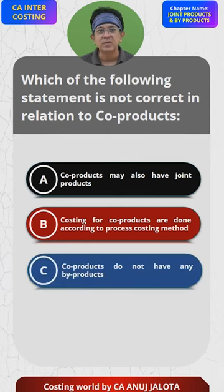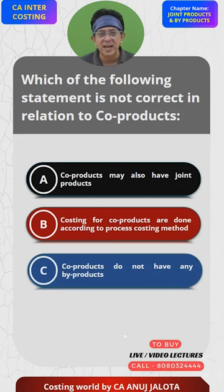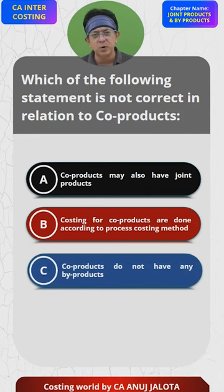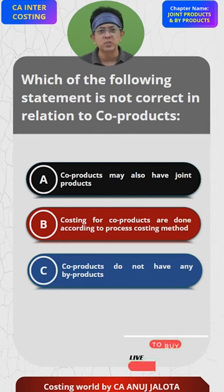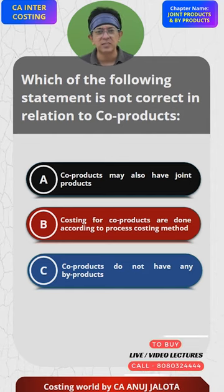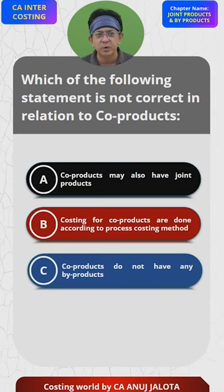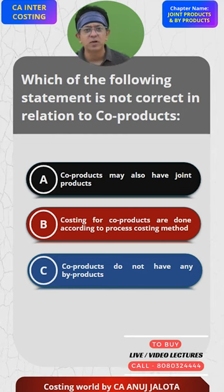Option C: Co-products do not have any by-products. This is incorrect — co-products might have by-products. For example, if you produce sunflower oil and mustard oil, some oil cakes might also get produced alongside sunflower oil, making oil cakes a by-product.